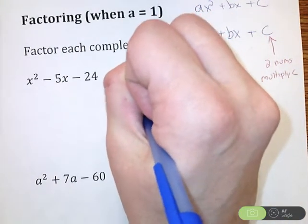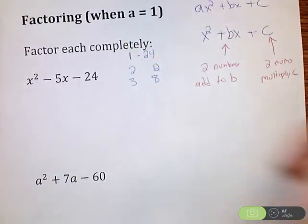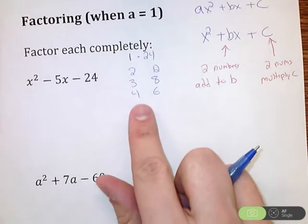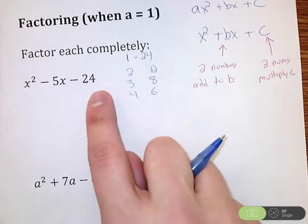2 and 12, 3 and 8, 4 and 6. So I know one of these has got to be positive, one's going to have to be negative to get negative 24.